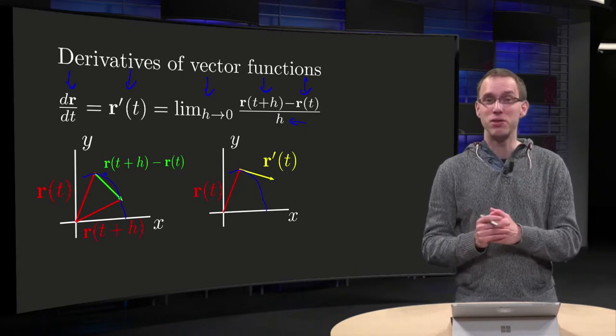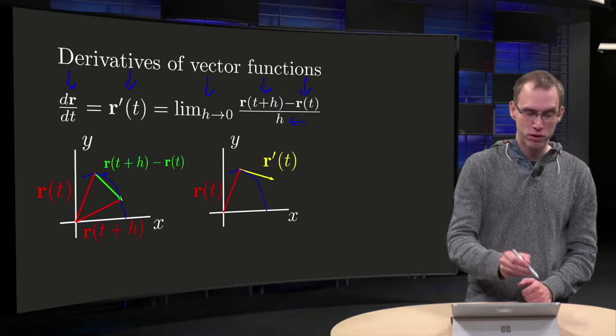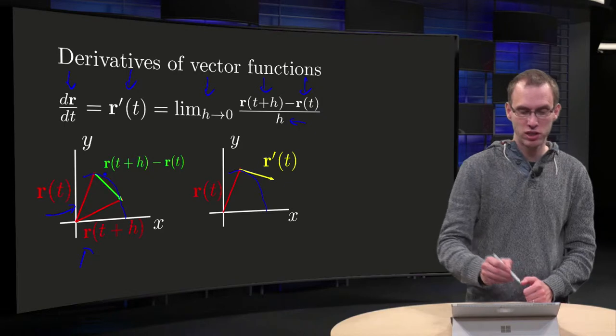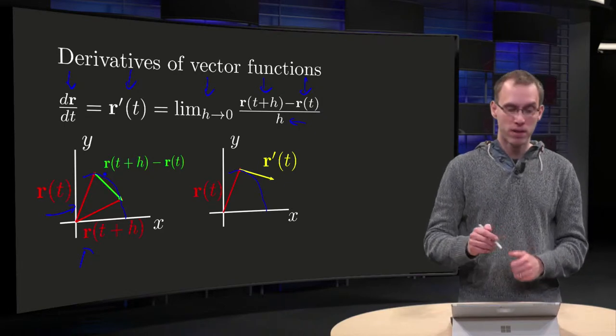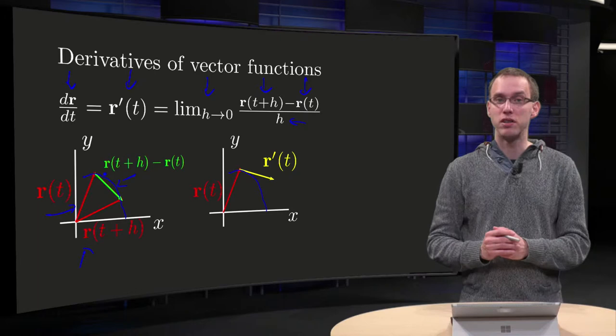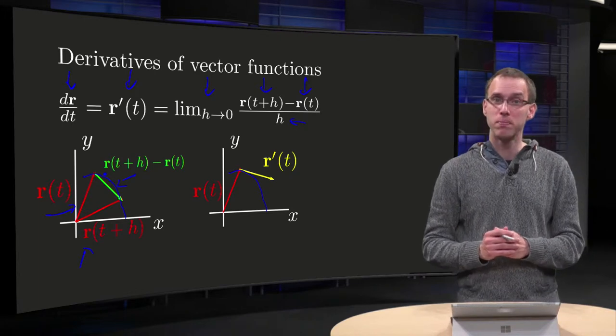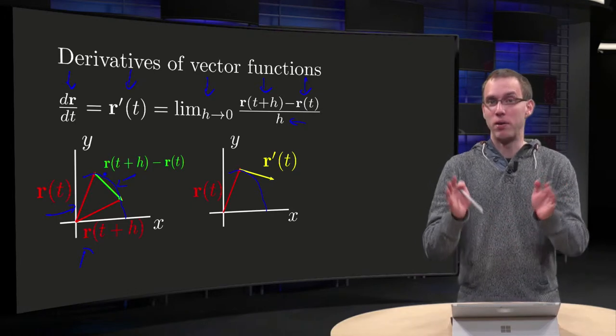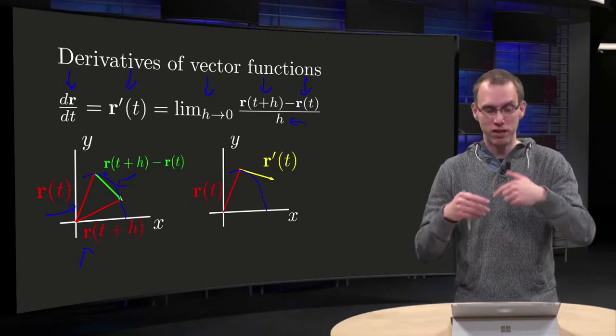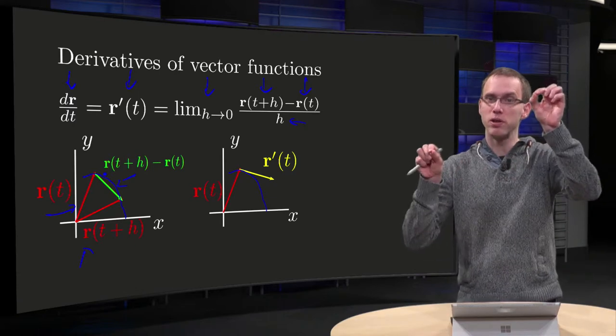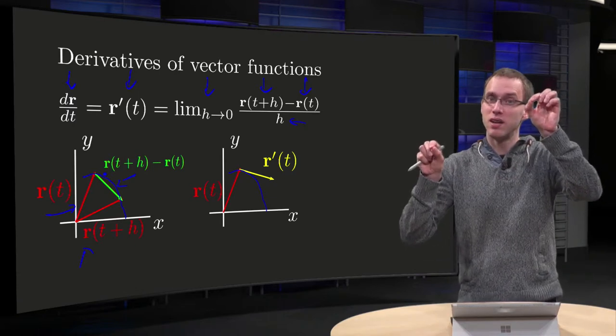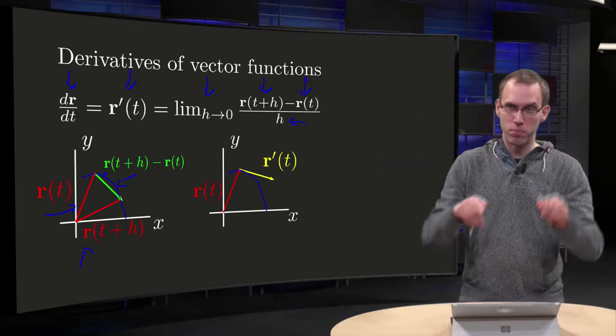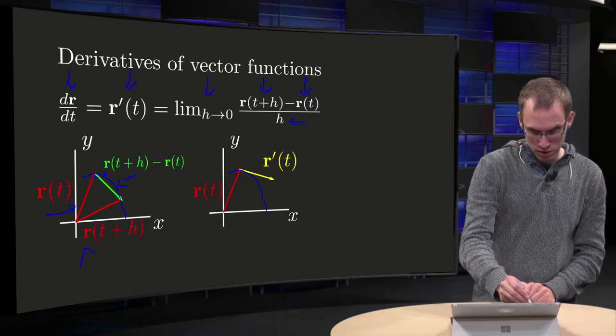What does this mean if you interpret this geometrically? Well, in the first picture we drew the r(t) and the r(t+h) over here, and the vector connecting them, r(t+h) minus r(t). Now the h is very big, so we have just this green vector which joins those two points, but then if you take the h to zero, you see the green vector is going to shift more and more like this, to this position for example.